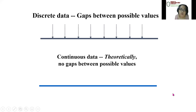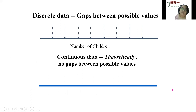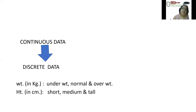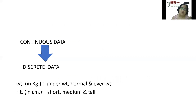In discrete data, there are gaps between possible values — whole numbers. In continuous data, theoretically there are no gaps between possible values, such as hemoglobin measurements. Continuous data can also be transformed into discrete data: weight in kilograms is continuous, but discretely it could be underweight, normal, and overweight; similarly, height could be transformed to short, medium, and tall, depending on how you want to present your data.